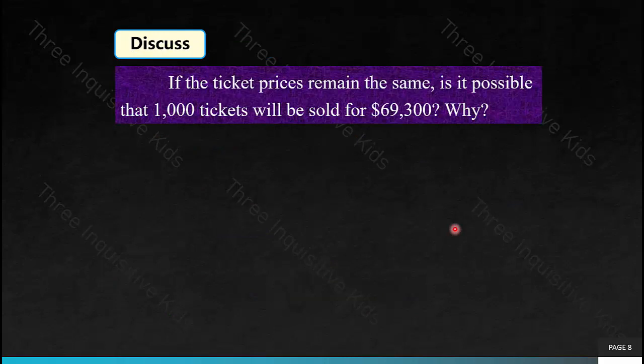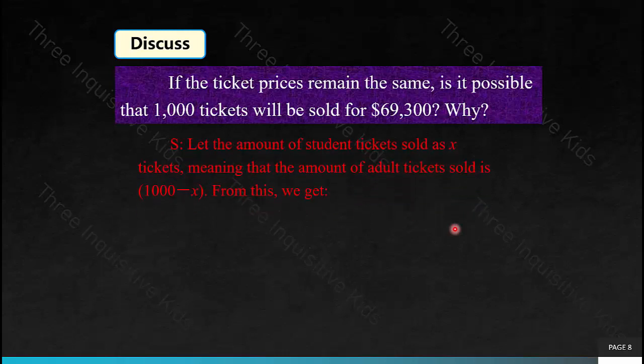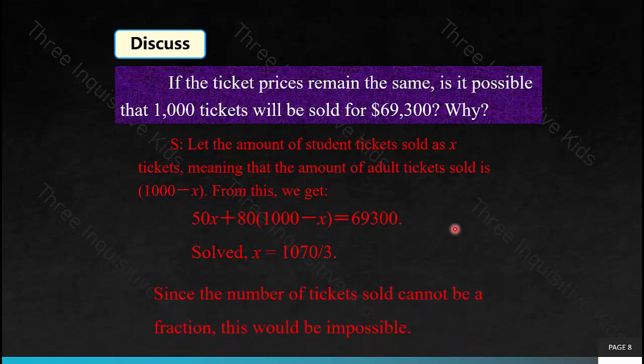If this is the same problem as before, but the total raised is $69,300 instead of $69,500 — with ticket prices remaining the same — is it possible that 1,000 tickets will be sold for $69,300? Let's set the amount of student tickets sold as X, so 50X plus 80(1,000 minus X) equals 69,300. Solved, X equals 1,070 divided by 3. But X represents the number of tickets sold, and you can't have a fraction of a ticket. Therefore, this would be impossible.